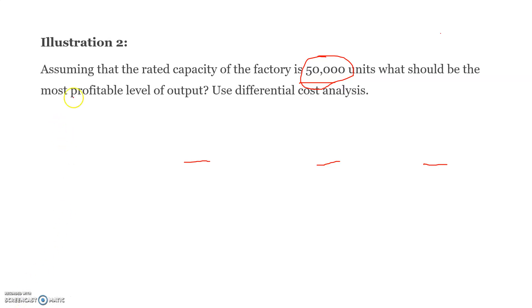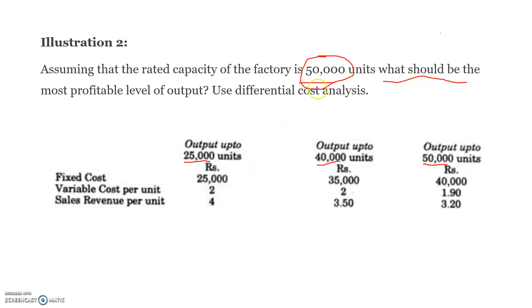This is the question. Assuming that the rated capacity or the maximum capacity of the factory is 50,000 units, what should be the most profitable level of output? Use Differential Cost Analysis. We need to find which level gives maximum profit to the company.